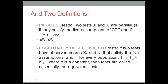What this is basically saying is that you can have parallel tests where the true scores are slightly differently calibrated — one test measures the true score slightly higher than the other. Nowadays this is not so important, so we're going to skip over the essentially tau-equivalent test definition. You should know it's there, but let's come back to the parallel test definition, which is important today both for understanding the history of the field and for understanding how the field works today.